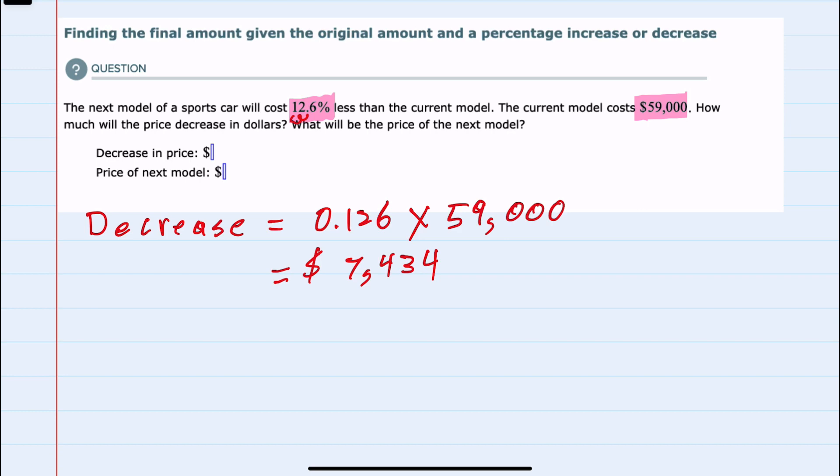And then for the second part of this problem, we're asked to find what the new price is going to be. And we know that the new price will be the original amount, that $59,000, minus the discount. So minus $7,434. So our new price doing that subtraction will be $51,566.